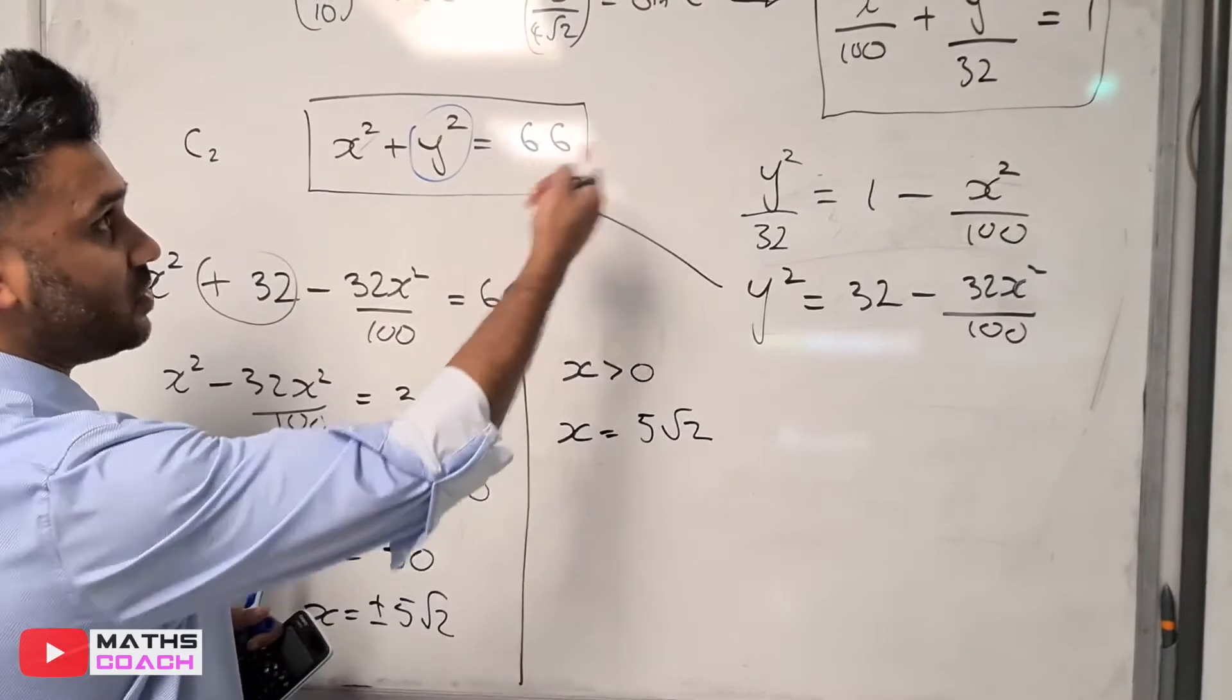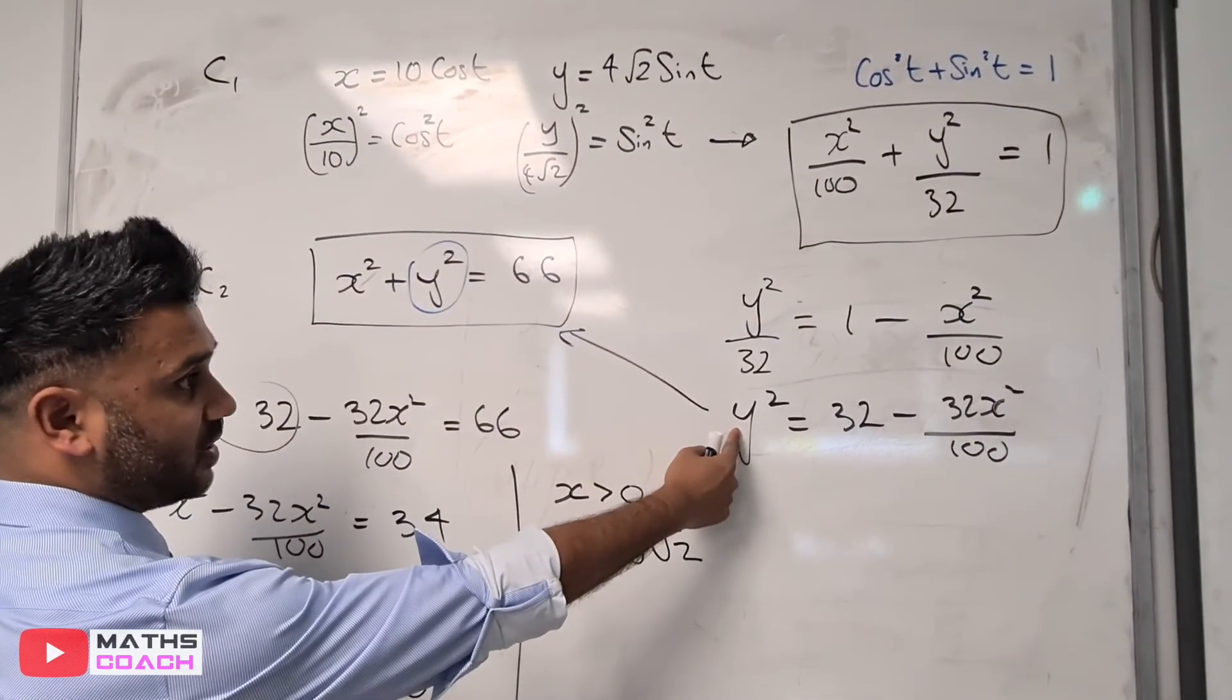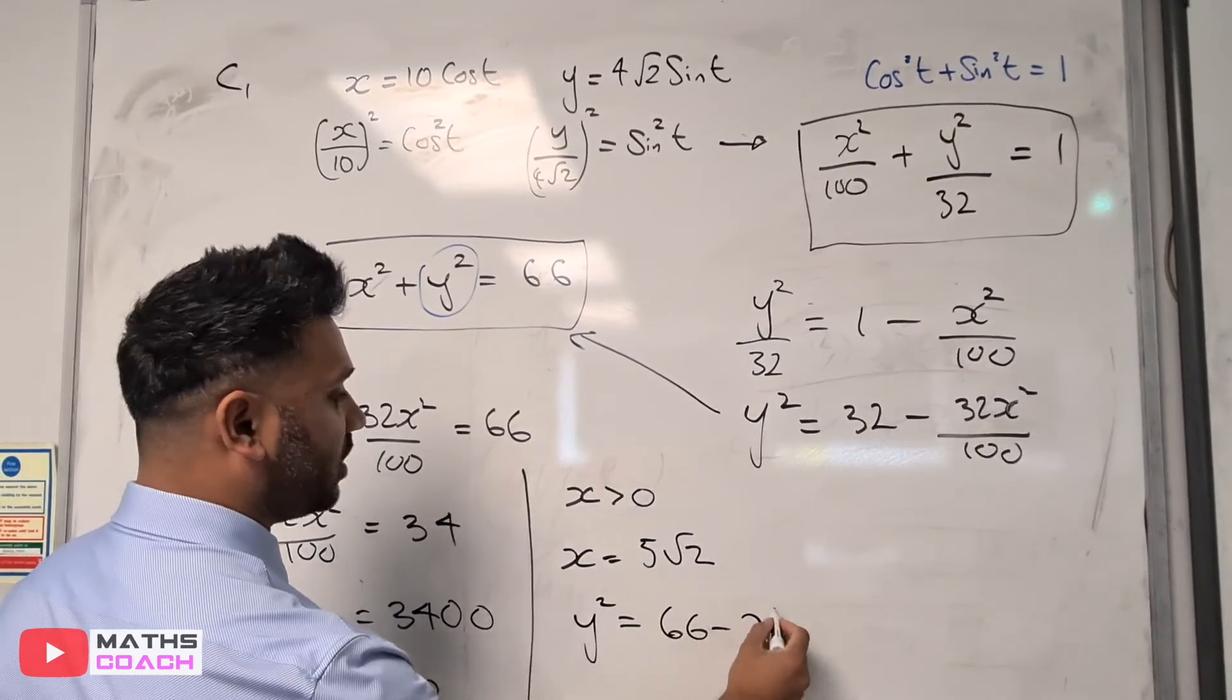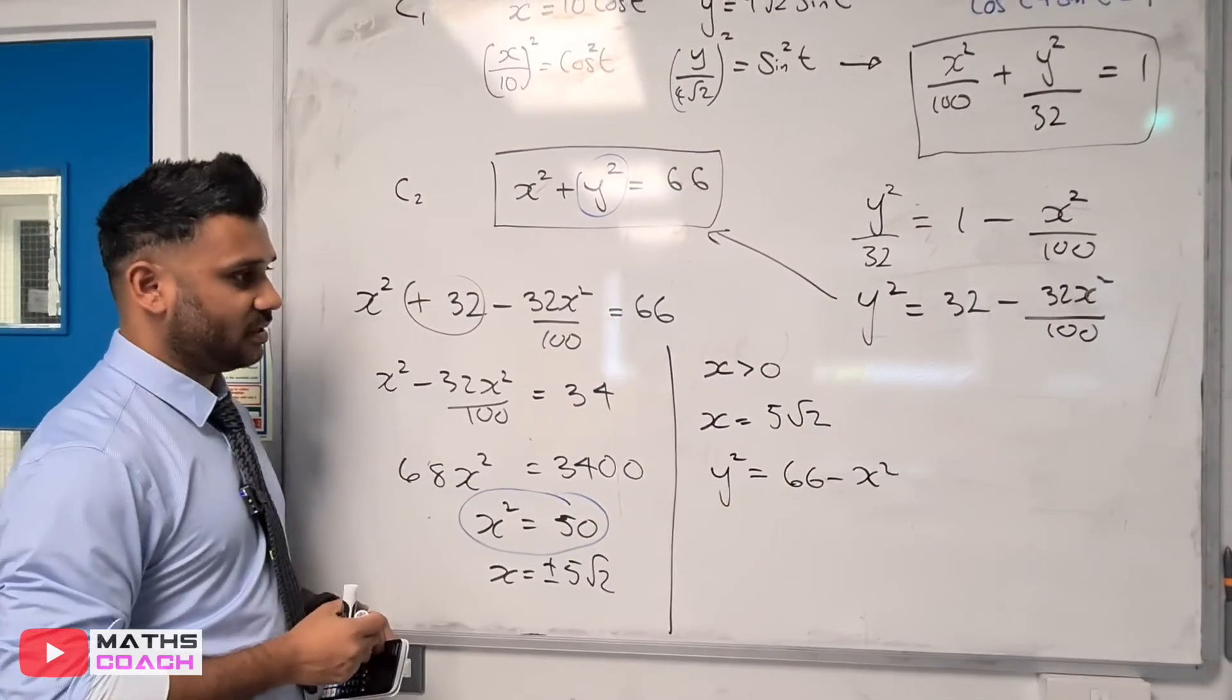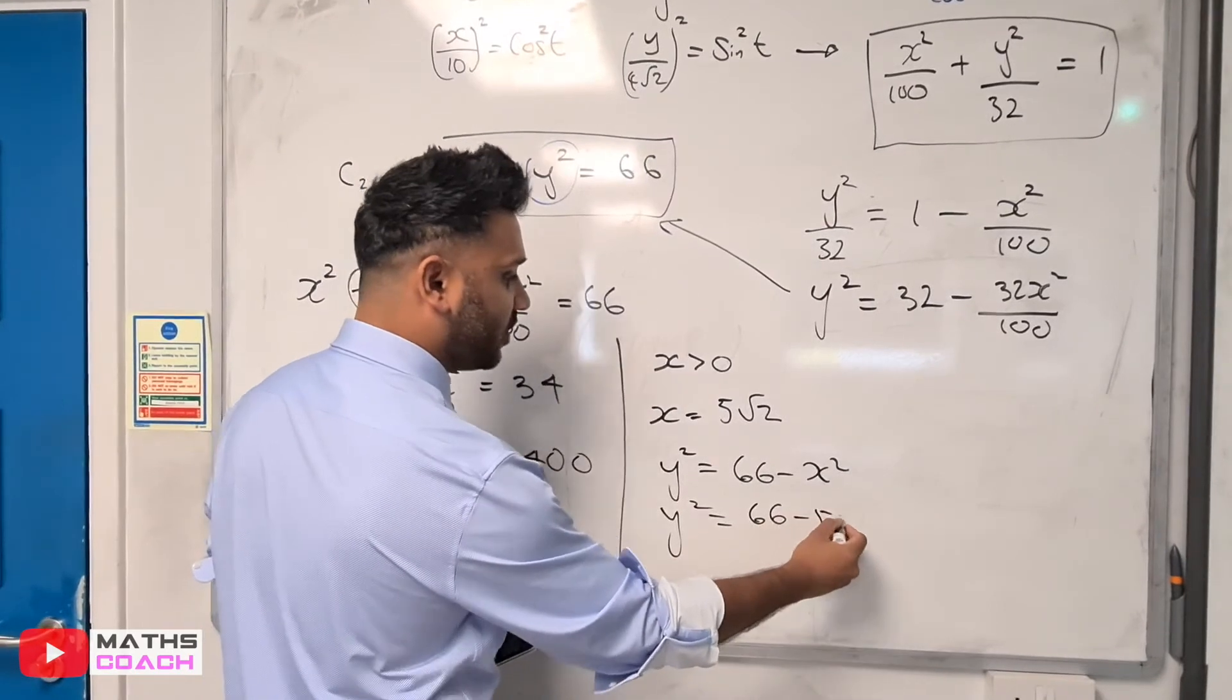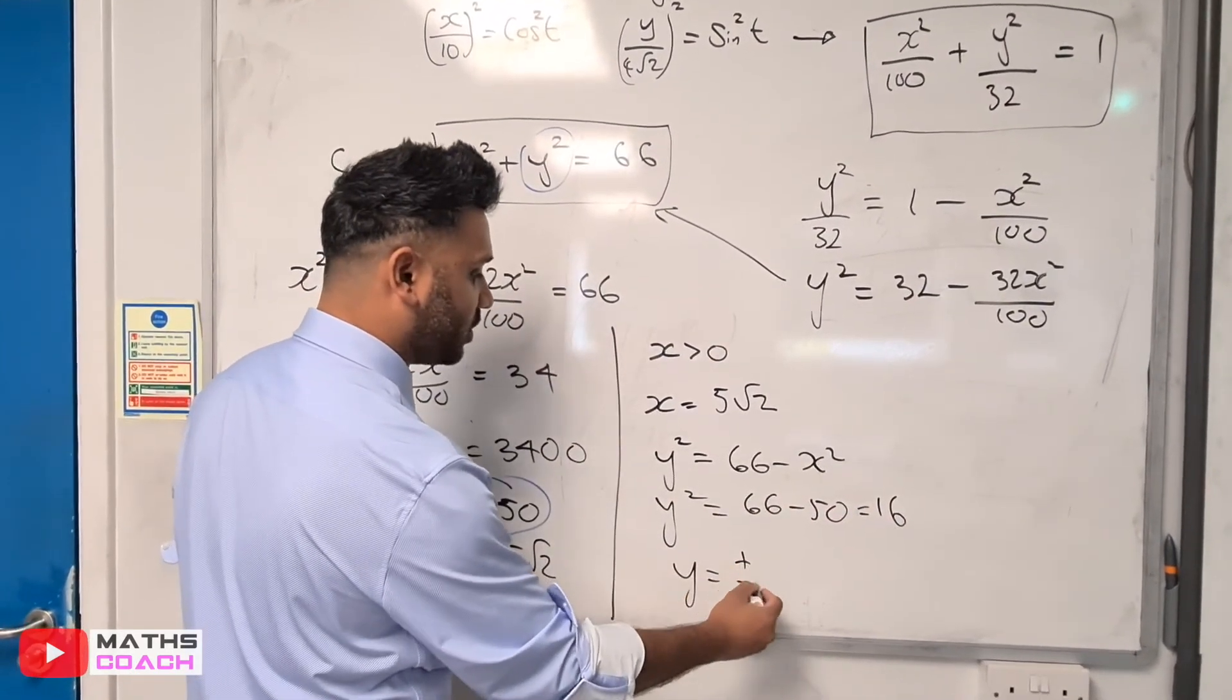To work out the y-coordinate, we have two equations we can use. I prefer to use this one where y² = 66 - x². Since x² = 50, we substitute that in. So y² = 66 - 50 = 16, and the square root of 16 is ±4.